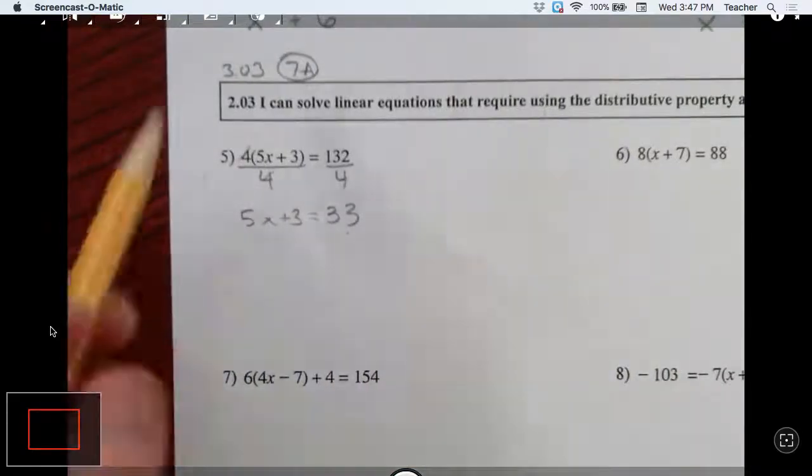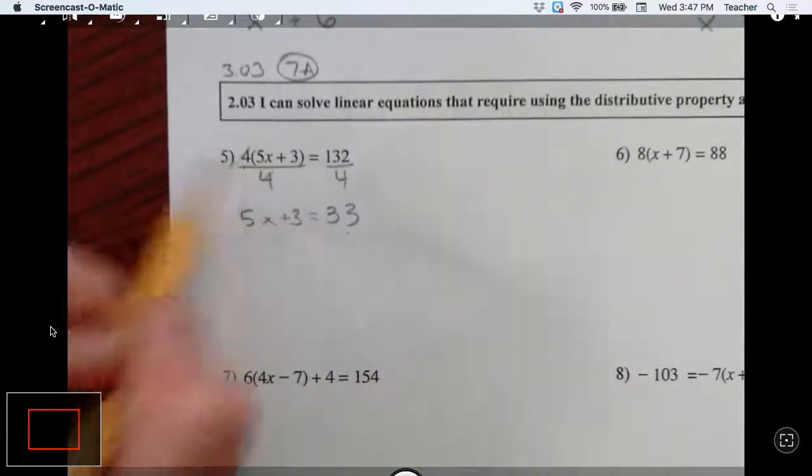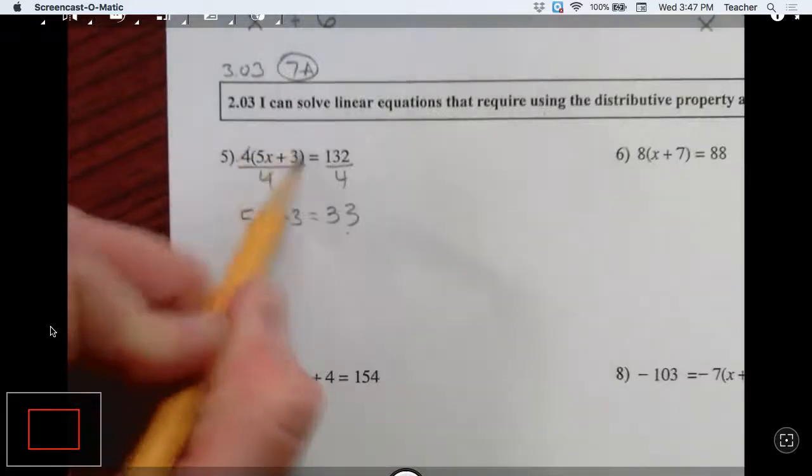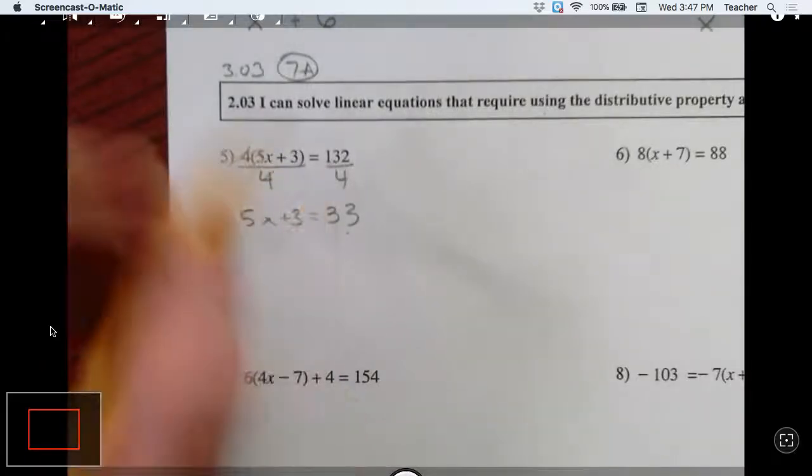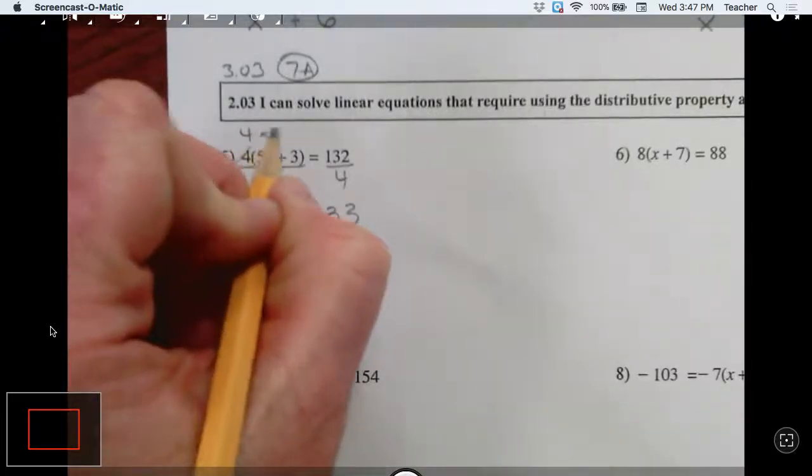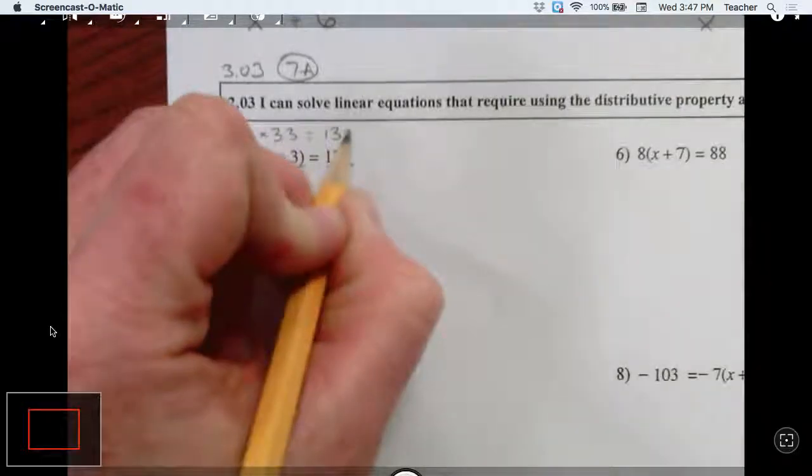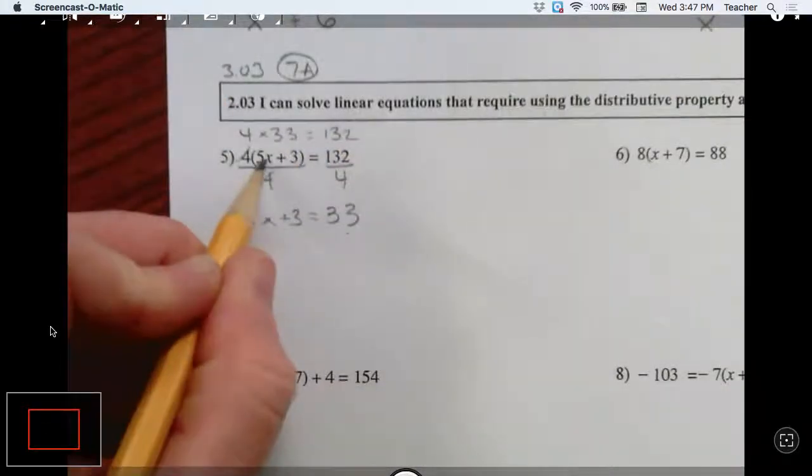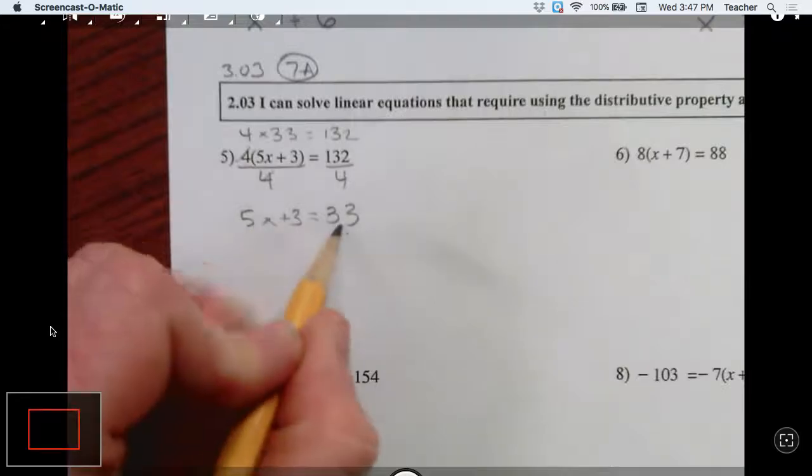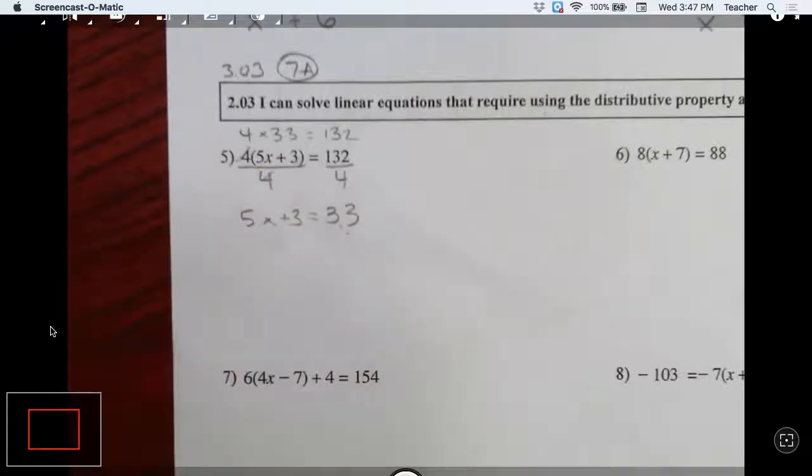So now this side is just 5x plus 3, and let's see, 4 goes into 132 thirty-three times. So let's think about this for a second just conceptually. 4 times some number is 132. Well, 4 times 33 is 132. So that means this 5x plus 3 has to equal 33. This has to be 33 for this to work. So you can kind of do this problem a little conceptually that way.